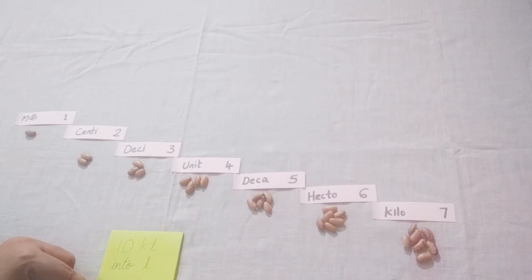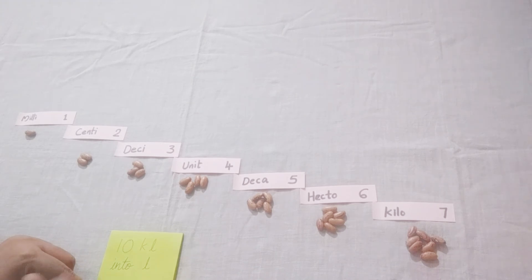Let's convert 10 kiloliters to liters. So in the place of kiloliters, we have two, four, six, seven - seven beans. And in place of liter or unit, we have four beans. So we have to convert 10 kiloliters to liters. So we have to make this four to seven.